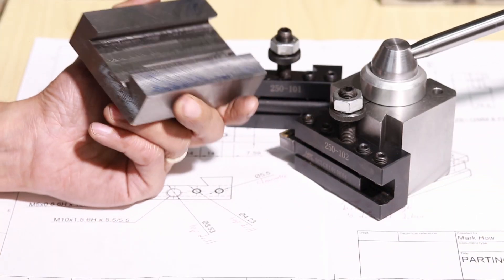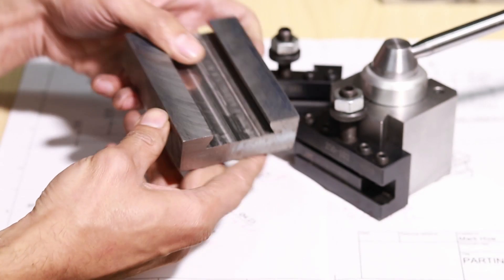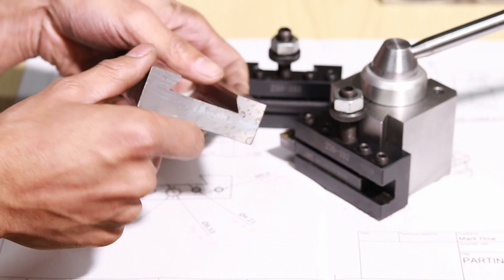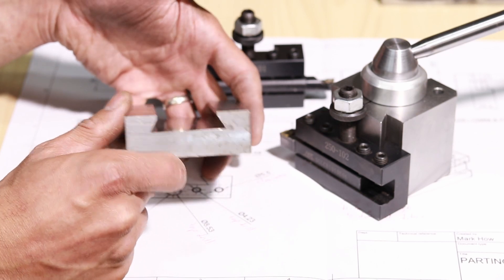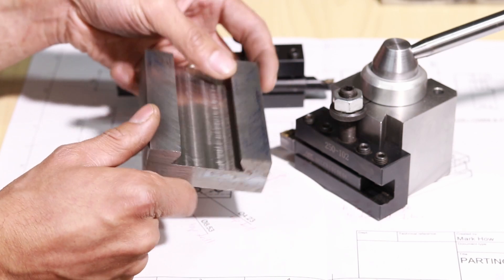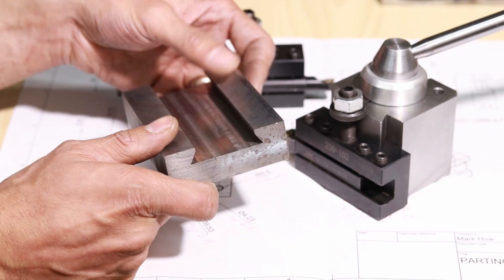If you caught the last video on the quick change tool post build, you would have noticed this is the block I was going to make the tool holders out of. To avoid continuity errors you'd want to make sure this was still to be machined, however this is what I cut my teeth on to see if I could actually make the project at all.